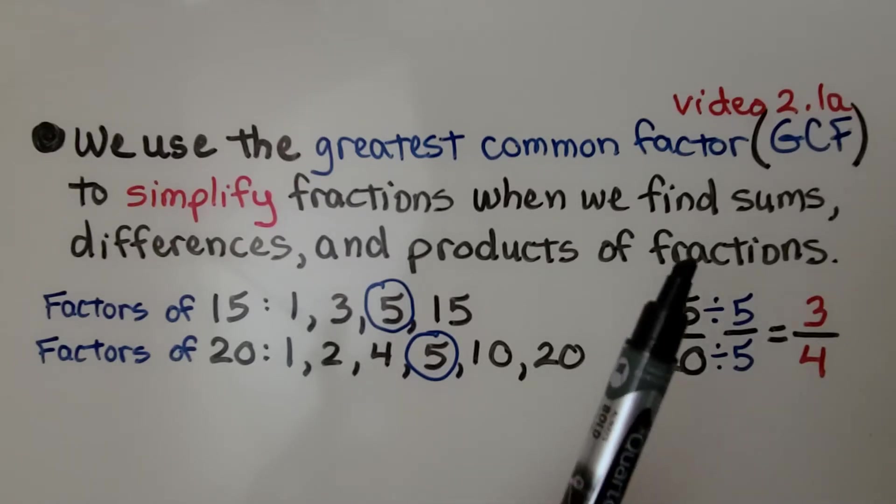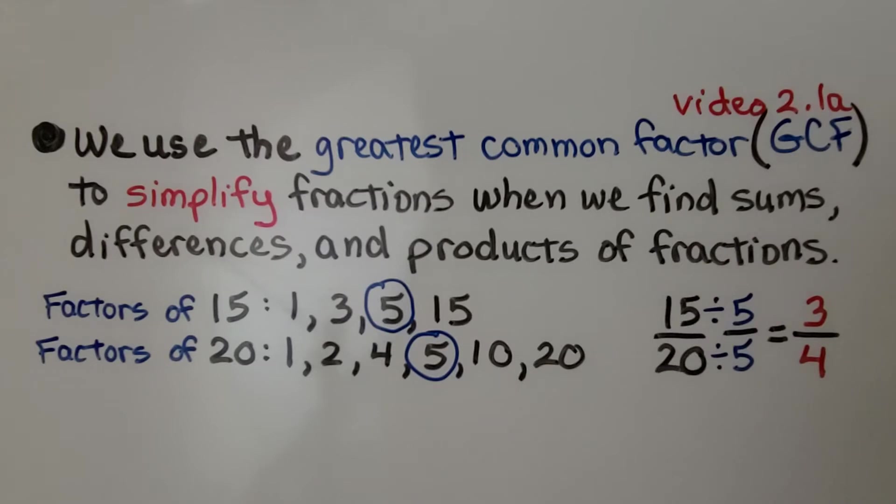We learned about GCF in video 2.1a, which is linked in the description. We have 15 20ths. We list all the factors of 15 and the factors of 20 until we find the greatest one they have in common. It's a 5. That means we divide the numerator 15 and the denominator 20 by that same number 5, and it simplifies to 3 4ths.